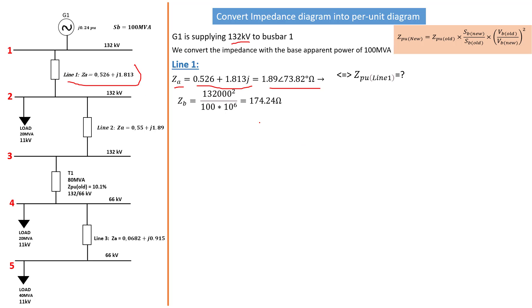Filling up the formula, ZB is equal to 174.24 ohm. Since we already know the value for ZA, we're just going to replace into the Z per unit formula. That gives us 0.011 with an angle of 73.82 J per unit. So that is now the Z per unit for line 1.